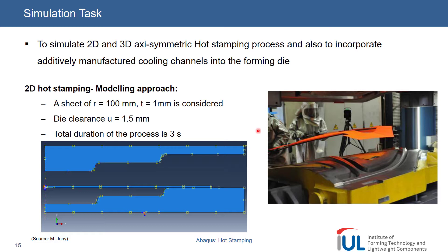To simplify things, we will consider an axisymmetric problem. I've shown here a screenshot of the final assembly in our CAE. This is 100 millimeters as a radius, and we have two geometrical steps in our die — so it's not a super complex shape, kind of like a two-step bowl.